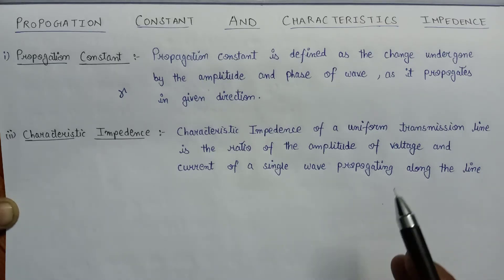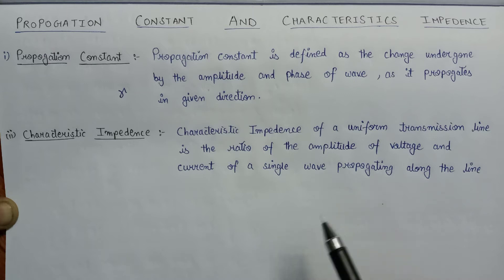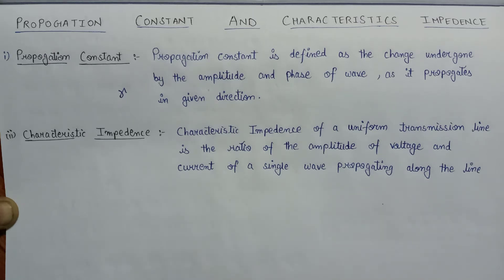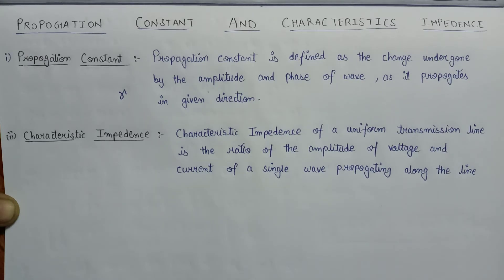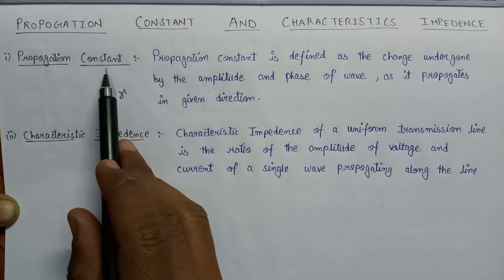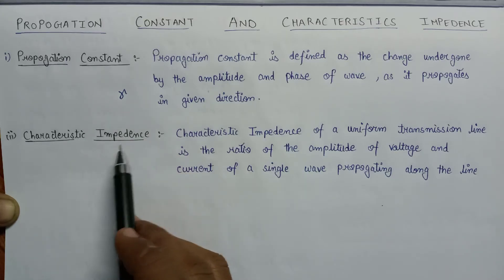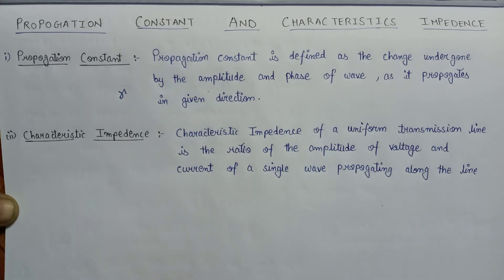This is the basic introduction of characteristic impedance and propagation constant. Now let us derive the formula for both. In the previous lecture, we discussed the equations of voltage and current of a transmission line.